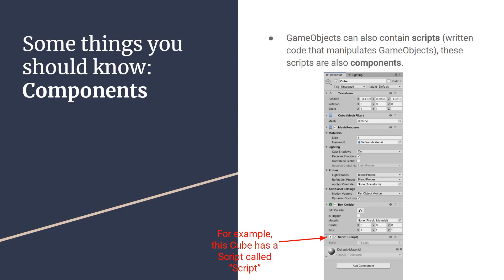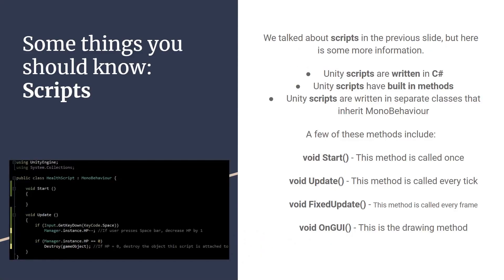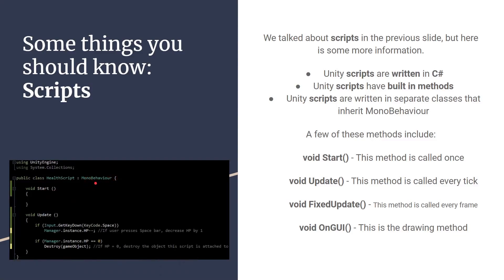All of this is from the Unity Editor — we won't be working with the Editor directly, but it's good to have a basic understanding so we can reverse it more easily. Unity scripts are written in C#. They have built-in methods and are written in separate classes that inherit MonoBehavior. Key methods include Start, which is called once when the game object is activated; Update, called every tick; FixedUpdate, called every frame; and OnGUI, the drawing method we'll use a lot when making a menu in the next tutorial.